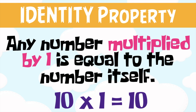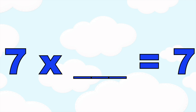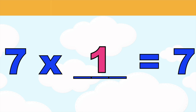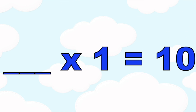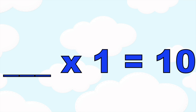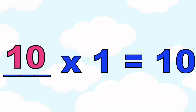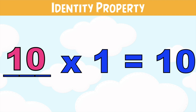For example, 10 times 1 is equal to 10. How about: 7 times blank is equal to 7 — what is the missing number? It's 1! Because of the identity property of multiplication — any number multiplied by 1, the product is the number itself. And if blank times 1 is equal to 10, the missing number is 10, also because of the identity property.